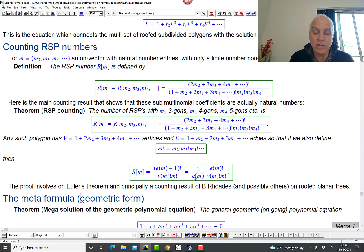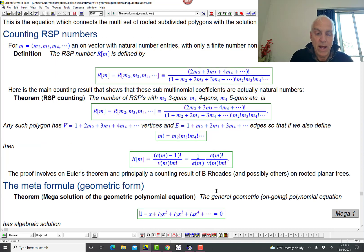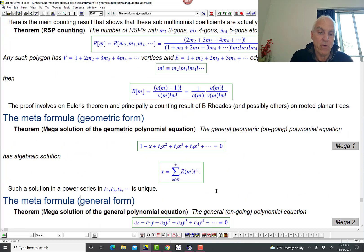And the proof ultimately comes down to the counting result of the combinatorialists, Brendan Rhodes, and possibly other people. So that's a key point. And then we have then the formulation of the mega solution of the general geometric polynomial equation. There it is there. That form with remarkably kind of concise formula. By the time you've encoded all this rich combinatorics into these coefficients R of M.